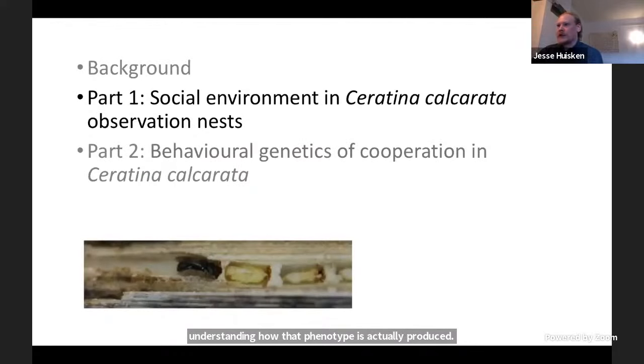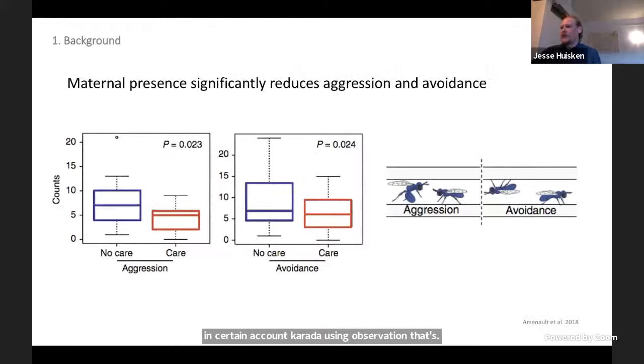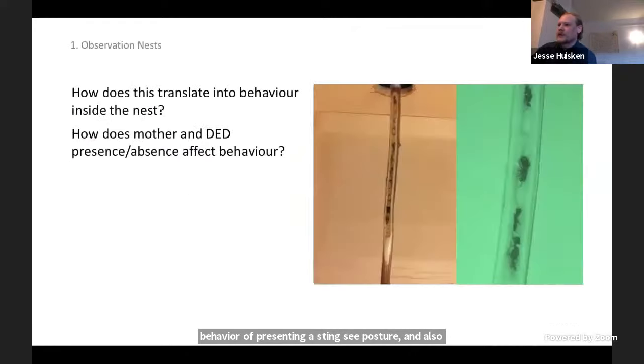For my first project, I looked at social environment in Ceratina calcarata using observation nests. We know from previous research that social environment is important to Ceratina calcarata, in particular maternal presence. Maternal presence reduces both aggression and avoidance in this species. This comes from circle tube research, where you can see classic aggressive behavior of presenting a sting posture and also avoidance within the circle tube, refusing to pass one another.